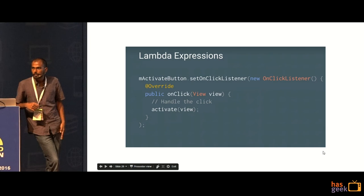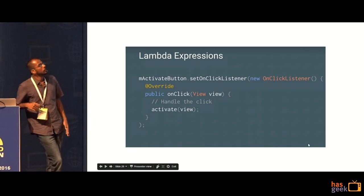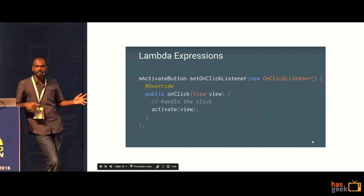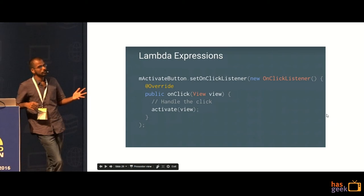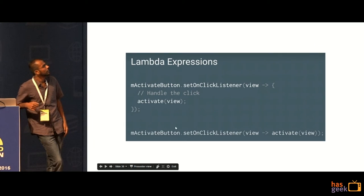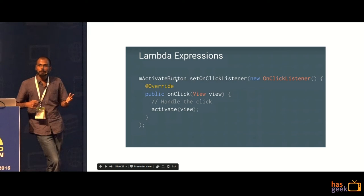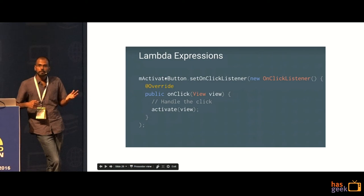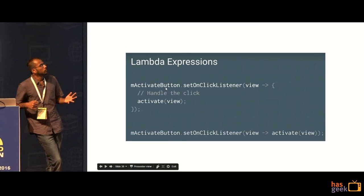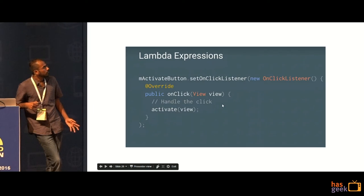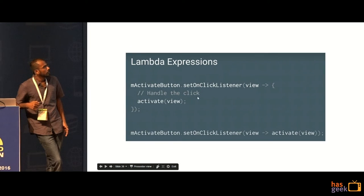How many of you know what lambda expressions are? Essentially, you can replace your OnClickListeners with lambda expressions. Your boilerplate will reduce — it is good all around and it looks nice to read. Lambda expressions are used for replacing any anonymous classes that you might be using which have a single function. For instance, the OnClickListener here has been replaced with just the activate view call and if you just have a single instruction in the lambda expression, then you can just reduce it to one line.